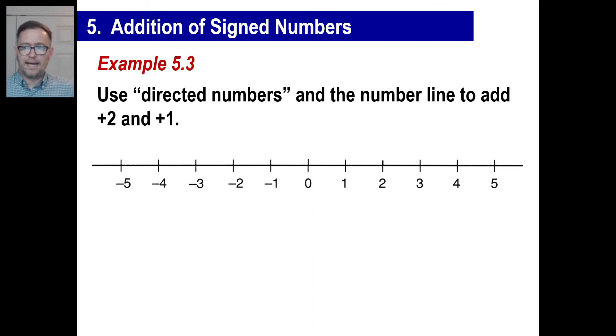Let's do another one. We're going to add positive 2 and positive 1 using directed numbers. Well, we start with positive 2, we add 1 to the right, there's our 3, correct?